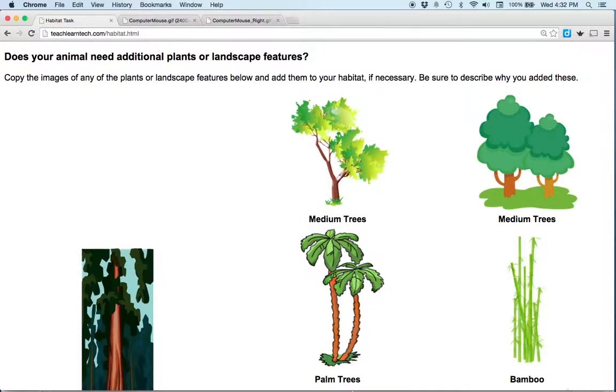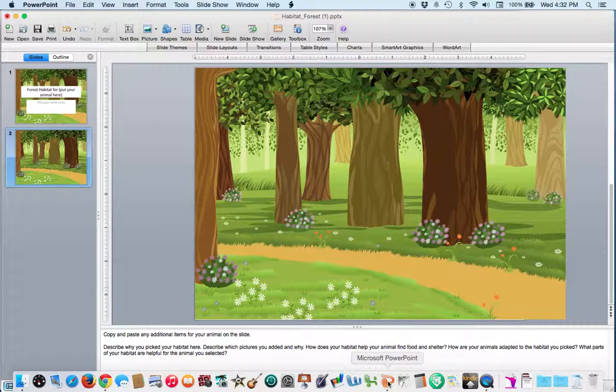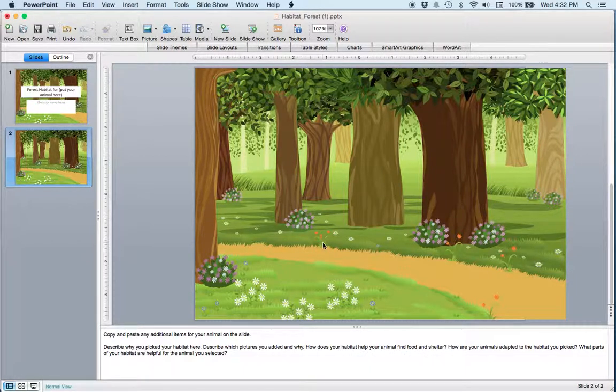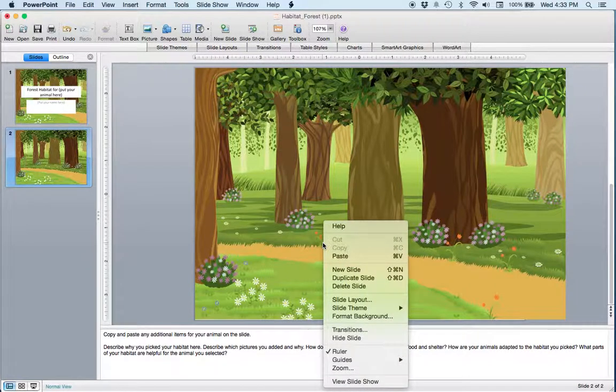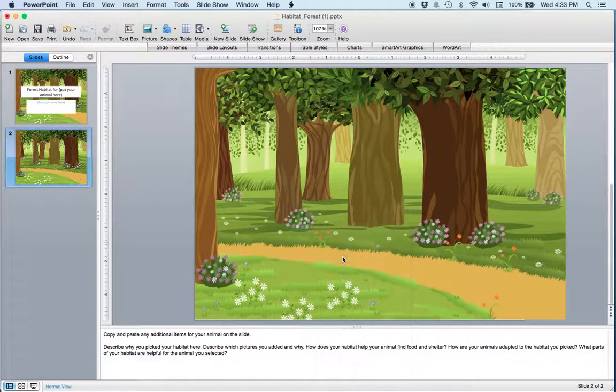Then go to your document or presentation. I'm using this one to create a habitat. In your document or presentation, right click again and select paste from that pop-up menu.